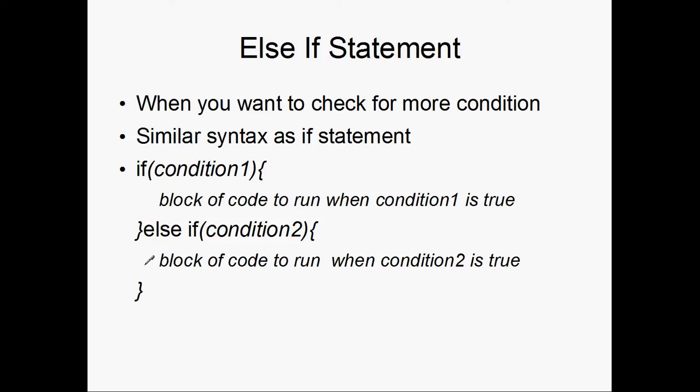So let's say you want to check for more conditions. You would simply use an else if statement. It follows a similar syntax. You check for condition 1, and if it's true, the block underneath it will begin to execute. But let's say it's false and condition 2 is true. Well, the block of code under condition 2 will start to run and it'll skip over condition 1.